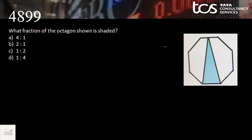What fraction of the octagon shown is shaded? Looking at the options, it cannot be 4:1 or 2:1 because it must be a fraction less than 1. It is not clearly one-half. The answer is 1 to 4. If anyone has the perfect solution to find this, please let us know.